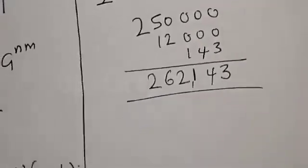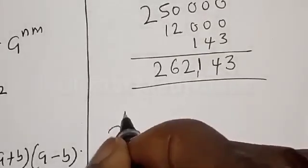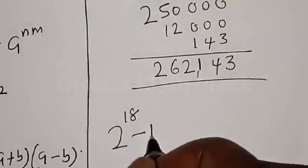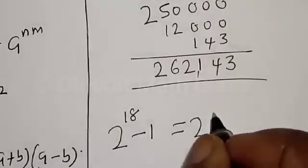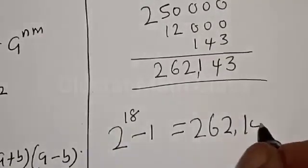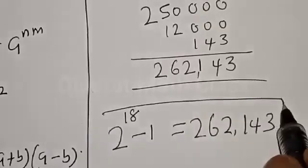Therefore, our final answer is 2 raised to power 18 minus 1 is equal to 262,143. That is our final answer.